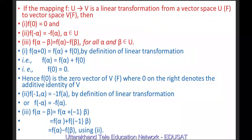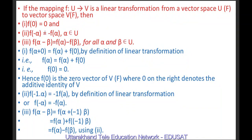Secondly, F(−1·α) = −1·F(α) = −F(α) by preservation of scalar multiplication. So F(−α) = −F(α). For the third property, F(α − β) = F(α + (−1)·β) = F(α) + F(−1·β) = F(α) + (−F(β)) = F(α) − F(β). Thus we have proved F(0) = 0, F(−α) = −F(α), and F(α − β) = F(α) − F(β) for all α, β in U.